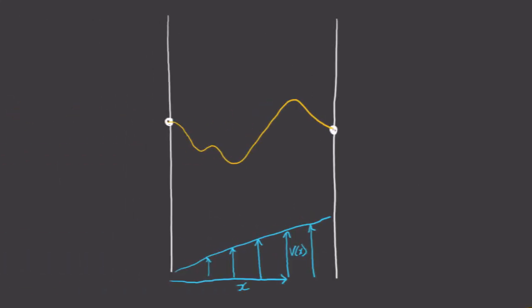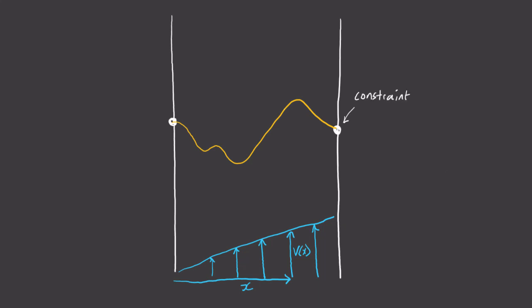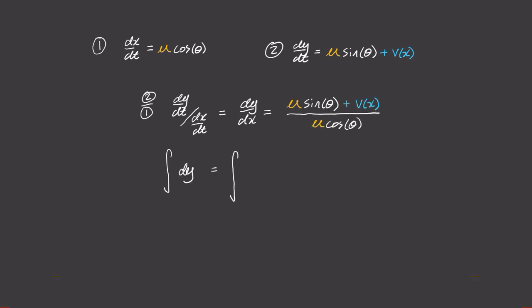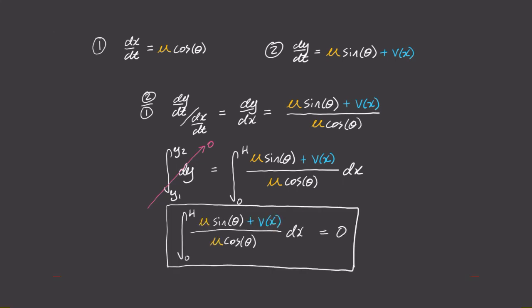But we're not done. We need to get to the exact opposite side of the river, and this is a constraint that we need to account for. So let's derive an equation for this constraint using the two equations we previously derived. Equation 2 divided by equation 1 yields the following. If we rearrange and integrate, then we get this. The left-hand side of this expression is the vertical displacement from where you started. Well, we want to end at the exact opposite side of the river, so delta y must be equal to 0. And there we have it. We have our constraint equation. This means whatever value of theta that we find that minimizes time must also simultaneously satisfy this integral.